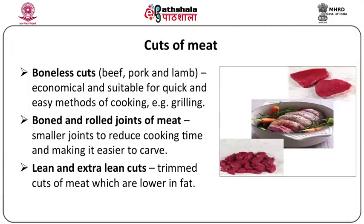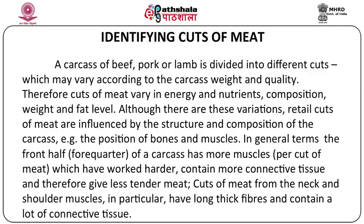Boneless cuts of beef, pork and lamb are economical and suitable for quick methods of cooking like grilling. Boned and rolled joints are smaller joints which help to reduce cooking time and make it easier to carve. Lean and extra lean cuts have the fat trimmed off so they are lower in fat. A carcass of beef, pork or lamb is divided into different cuts which may vary according to carcass weight and quality, affecting energy and nutrients, composition, weight and fat level. Retail cuts of meat are influenced by the structure and composition of the carcass.